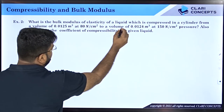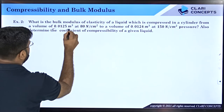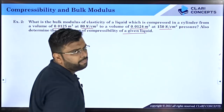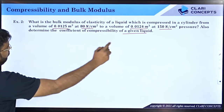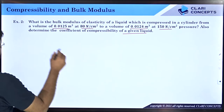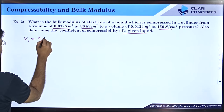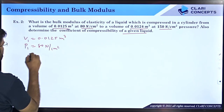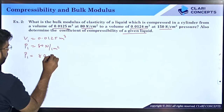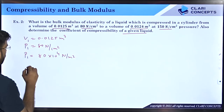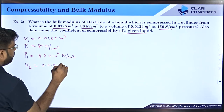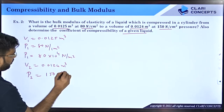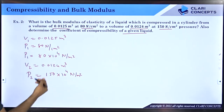Second numerical: what is the bulk modulus of elasticity of a liquid which is compressed in a cylinder from a volume of 0.0125 meter cube at 80 Newton per centimeter square to a volume of 0.0124 meter cube at 150 Newton per centimeter square? Also determine the coefficient of compressibility. Given: V1 equals 0.0125 m³, P1 equals 80 Newton per centimeter square equals 80 into 10 to the power 4 Newton per meter square, V2 equals 0.0124 m³, P2 equals 150 into 10 to the power 4 Newton per meter square.